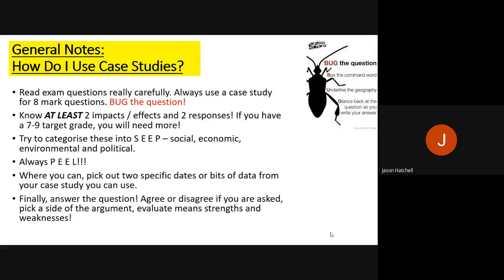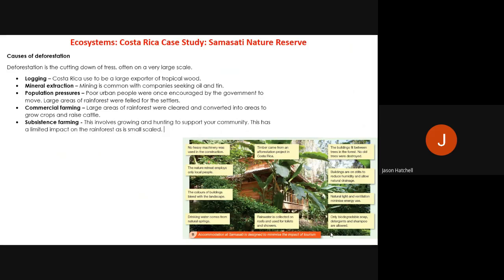We'll now go through the large case studies for each of the eight topics. Starting with ecosystems, the first case study is the Costa Rica Samasati Nature Reserve, which is an example of eco-friendly tourism. The causes of deforestation threatening ecosystems in Costa Rica include logging, mineral extraction, population pressure, commercial farming and subsistence farming.